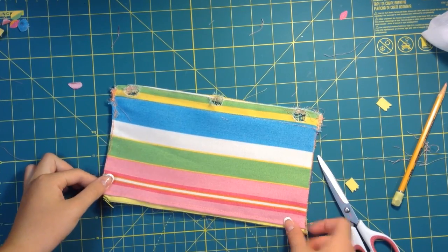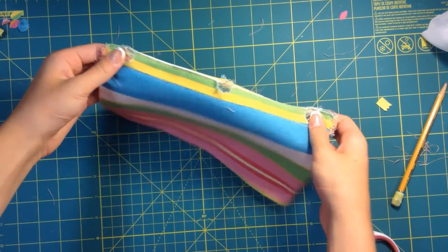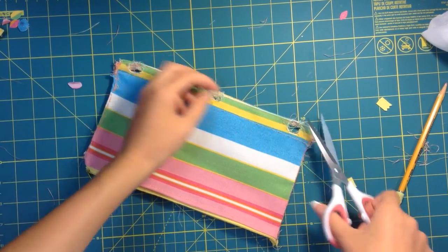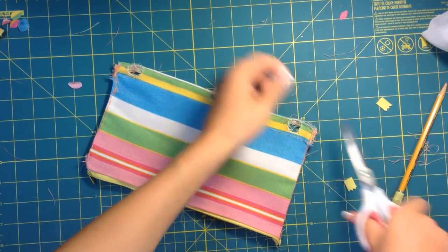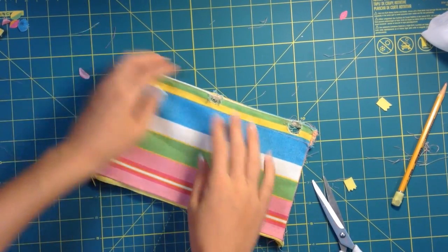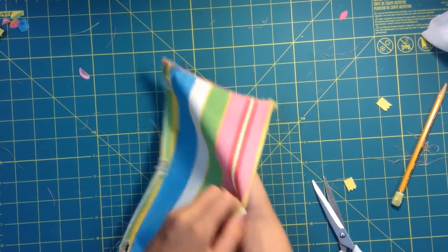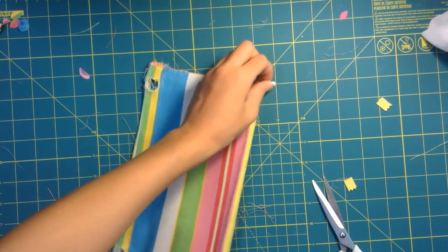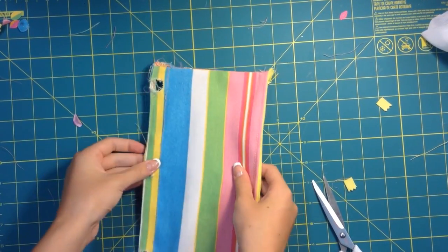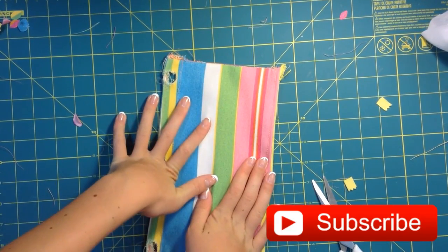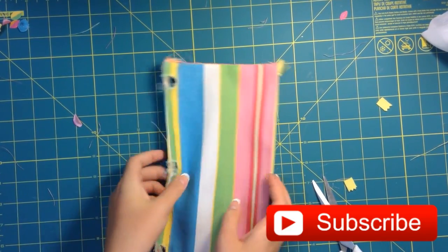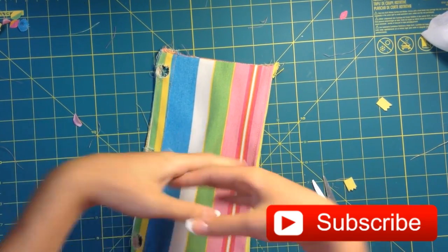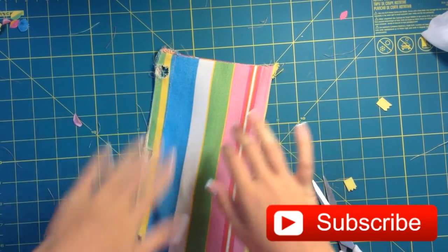So after you do that, it's pretty much done. And I know it might look a little messy, but you can just go ahead and trim threads and stuff to make it cleaner and stuff like that. And once you do it a couple times, you'll get the hang of it. And it fits pencils. And it zips really nicely. And so I think that's pretty much it for this video. I hope you guys enjoyed it. And don't forget to subscribe to my channel so you don't miss out on any of my future videos. And I will see you guys next time. Bye!